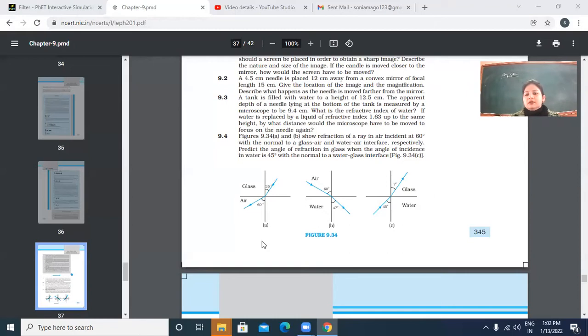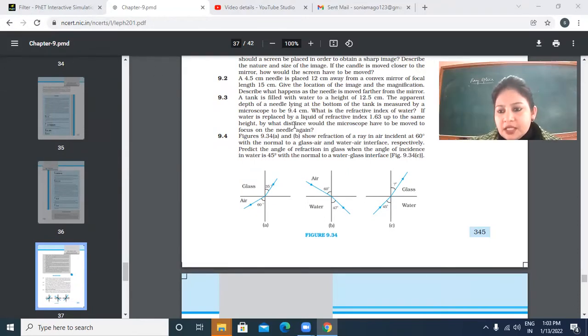We were doing question number 9.3, a normal shift question. Refractive index is real depth divided by apparent depth. For water, if you replace it with another liquid whose refractive index is given as 1.63, then you will have to find the distance through which the microscope has to be moved. That distance is called normal shift. In this case, the formula for normal shift is x equals d times 1 minus 1 over mu.